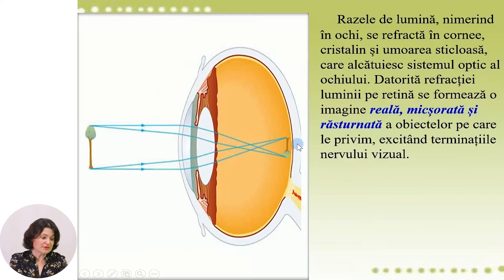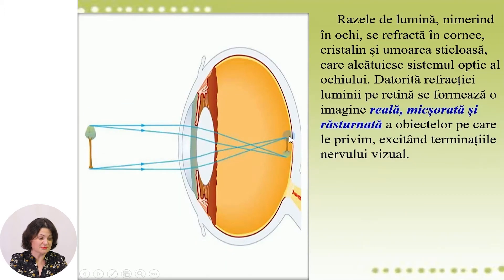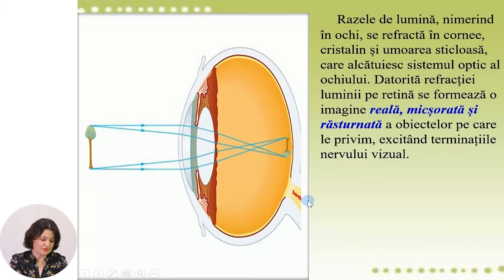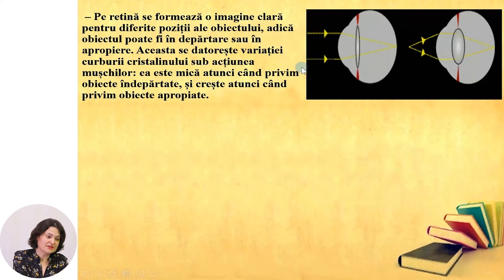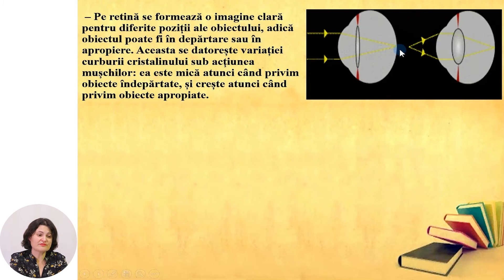On the retina, we observe that the image of the object is formed — it is real, reduced, and inverted, as we can see from the diagram. This image excites the endings of the optic nerve. On the retina a clear image of the object is formed for different positions, meaning the object can be far away or nearby.